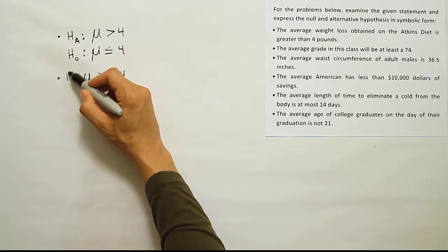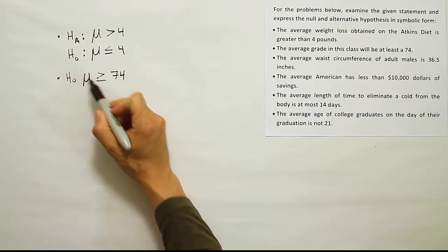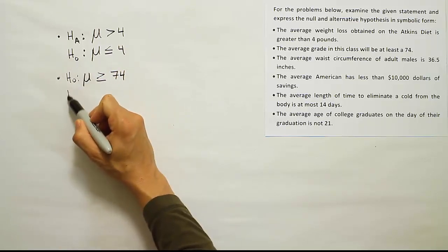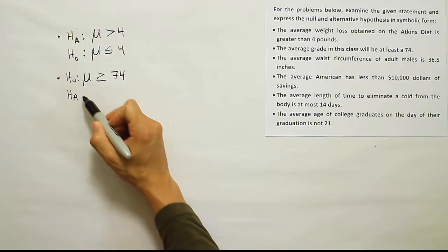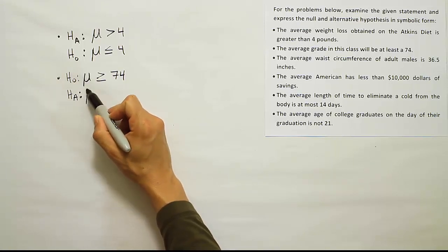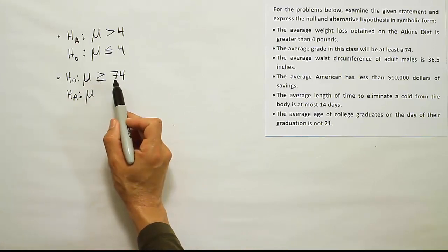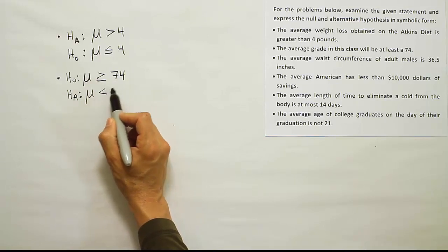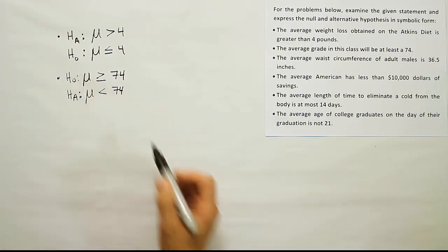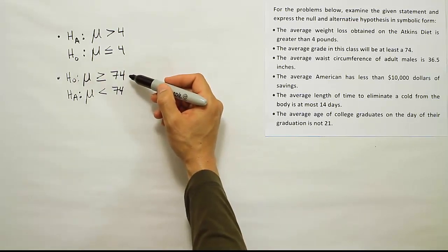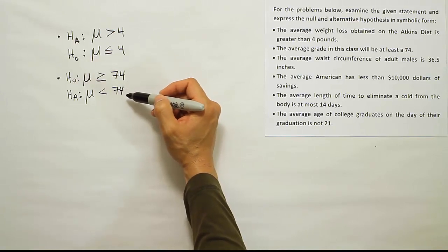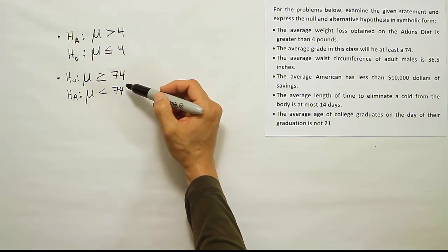Now this would have to be H₀ because this claim has an equal sign. That means our pair would be Hₐ, and this would be the complementary idea. So if you're not greater than or equal to 74, the only way that's not true is if you are less than 74. It's the only scenario where this isn't true - the top one isn't true only when the mean is less than 74. So these two together form all the possibilities.